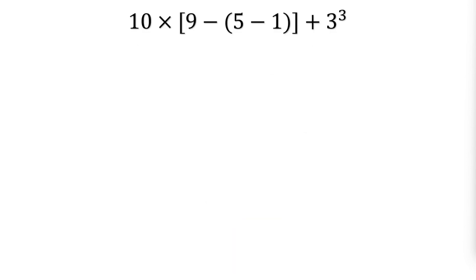Here is our last problem. You see two sets of grouping symbols. In that case, you should perform the operations inside the innermost parentheses first. 5 minus 1 is 4. Then you perform the operations inside the brackets. 9 minus 4 is 5.